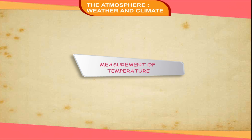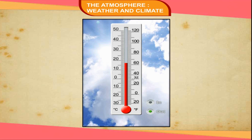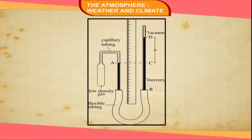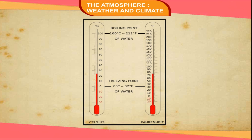Measurement of Temperature. Temperature is measured by an instrument called a thermometer. A thermometer is a narrow glass tube which is graduated and filled with mercury or alcohol. It works on the principle that mercury expands when heated and contracts when cooled. The expansion and contraction of mercury in a calibrated tube indicates the temperature. We use two different scales: Fahrenheit and Celsius.